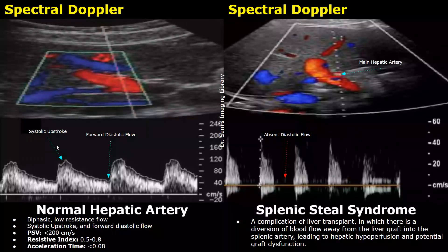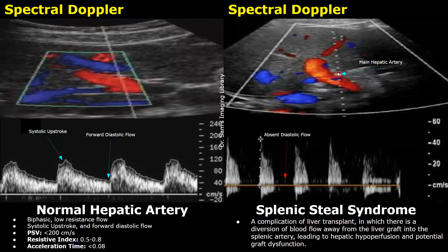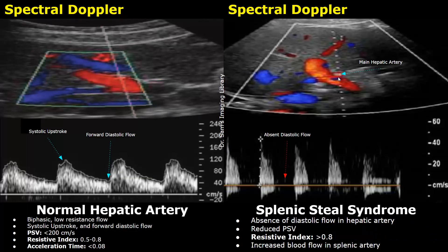We will now compare normal hepatic artery parameters with abnormal ones. Splenic steal syndrome is a complication of liver transplant. In this condition, blood flow to the hepatic artery gets diverted towards the splenic artery, so less blood goes to the liver, which can cause hepatic graft dysfunction. Splenic steal syndrome has various features seen on spectral Doppler. One of them is absence of diastolic flow in the hepatic artery, with a reduced peak systolic velocity (PSV). The PSV is only around 40 centimeters per second, whereas in normal cases it is around 120 centimeters per second.